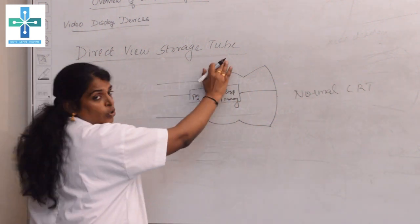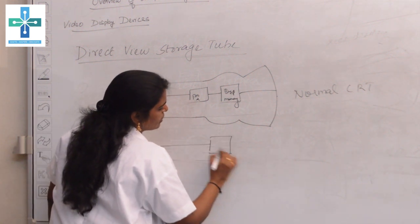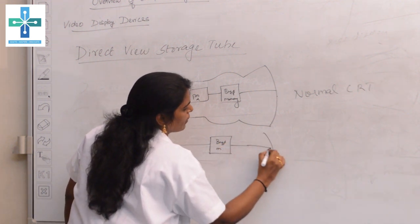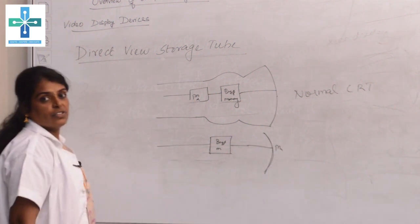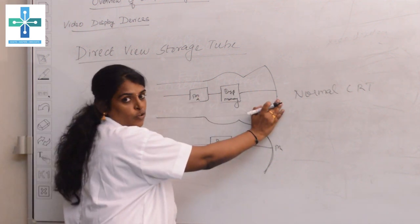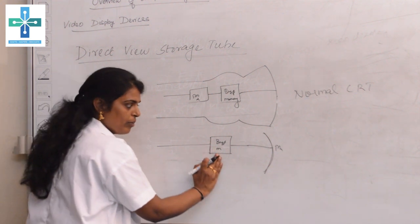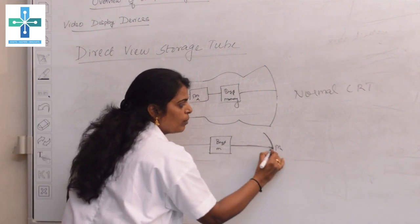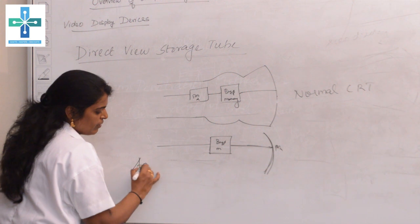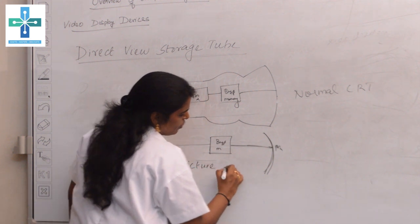In a direct view storage tube, the picture definition is directly stored inside the buffer memory. From the buffer memory, the image is displayed directly on the phosphor. The advantage of this is that the picture resolution will be very, very high when using a direct view storage tube.